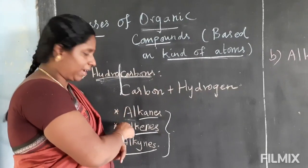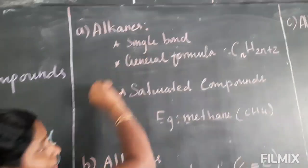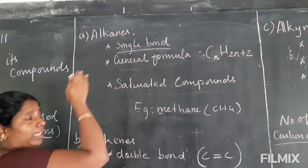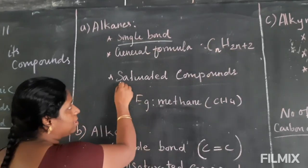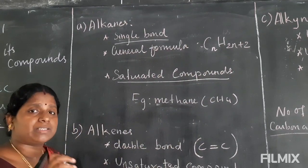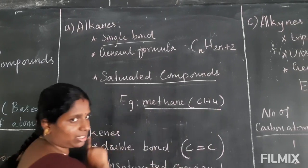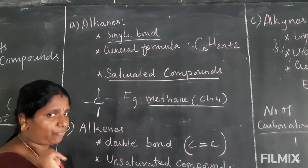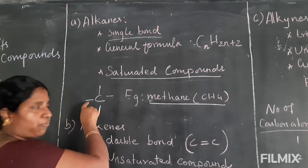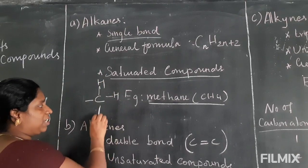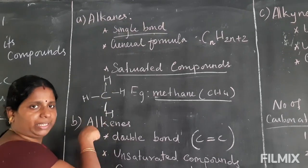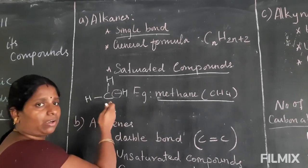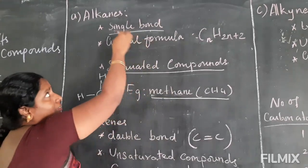The first class of hydrocarbons is alkanes. The characteristic of alkanes is a single bond between carbons — making it a saturated carbon compound. For example, methane: carbon has a valency of 4 (tetravalency), so four hydrogen atoms are shared with it. In the structure of methane, between carbon and hydrogen there is only a single bond. So methane is under the class alkanes.